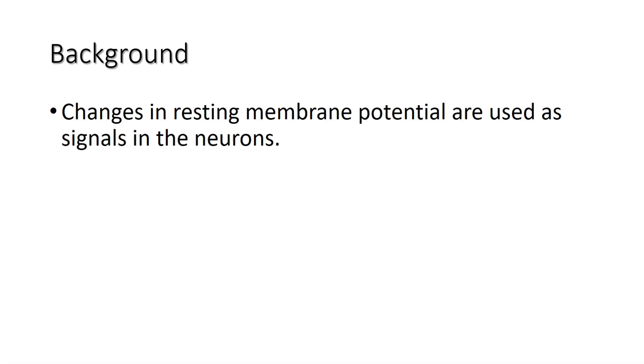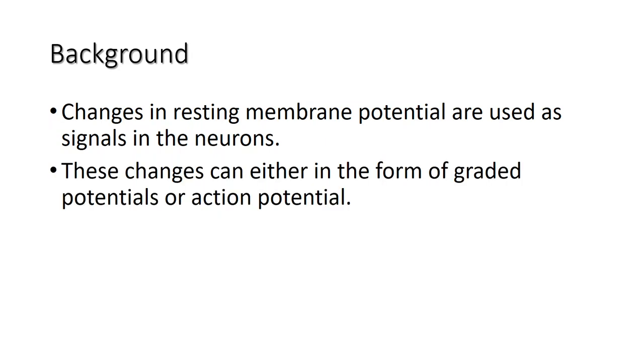In this video, I will explain the graded or local potential changes in the membranes of excitable cells. Please recall that changes in the resting membrane potential are used as signals in the neurons. These changes occur in the form of either graded potentials or action potentials.